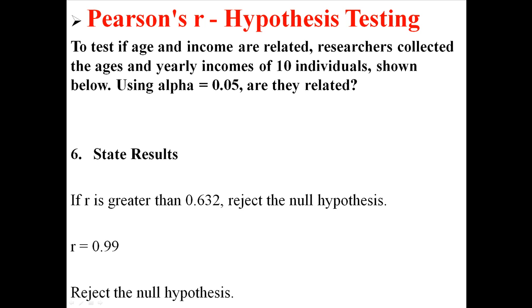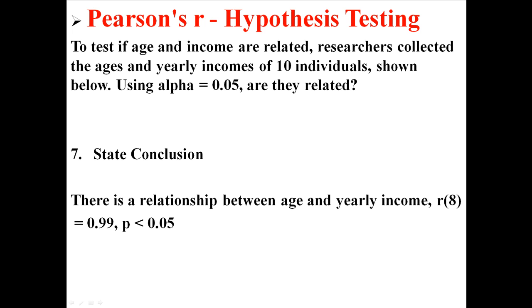We were going to reject the null, and our R was 0.99. So based on this information, we are going to reject the null hypothesis, therefore concluding that there is a relationship between age and yearly income.